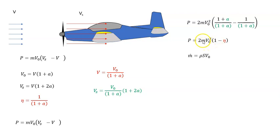Before I do that, we need the mass flow: m = ρSV₀. Substituting that back in, I get power P = 2ρSV₀³(1 - η). Transposing that to give us V₀, so V₀